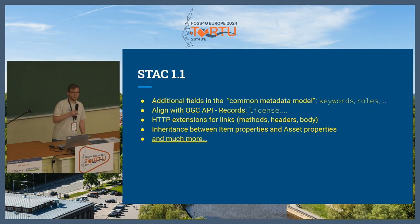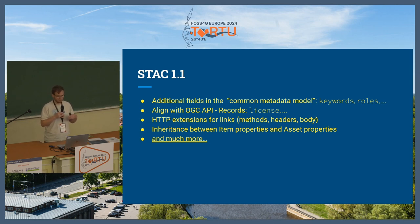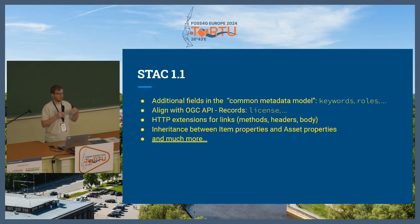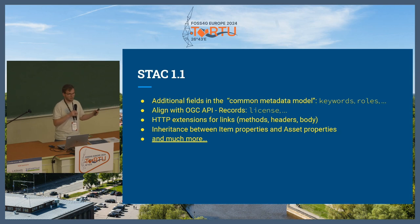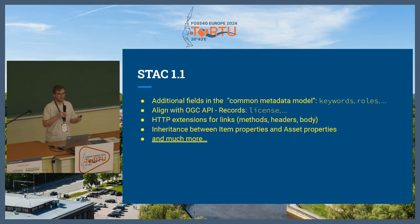STAC 1.1 is on the horizon and being worked on right now. There will be additional fields in the so-called common metadata model. The common metadata model is something in STAC where you can define fields that can be used in any of the entities. At the beginning of STAC, fields were often specified narrowly for items or collections; then people said they wanted to use them elsewhere, so we came up with this common metadata model so all fields can be used anywhere. That means, for example, that you can now assign keywords not just to collections but also to items, assets, links, and use them for search or whatever.